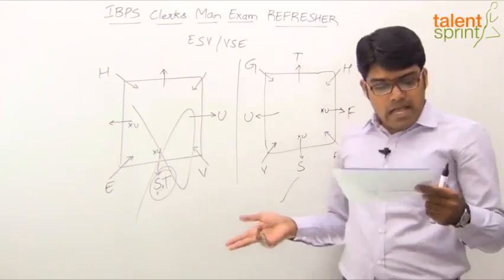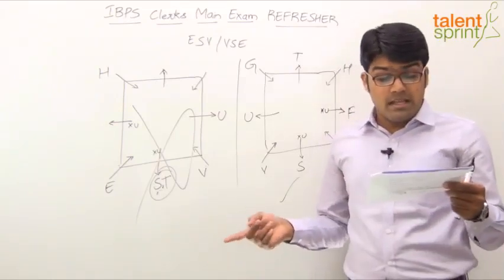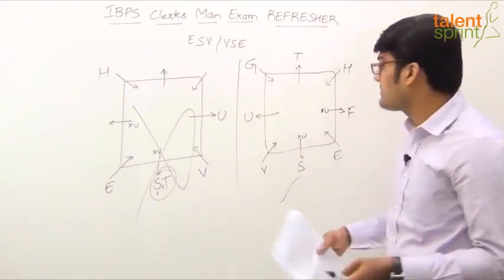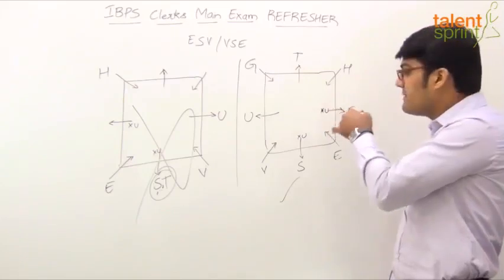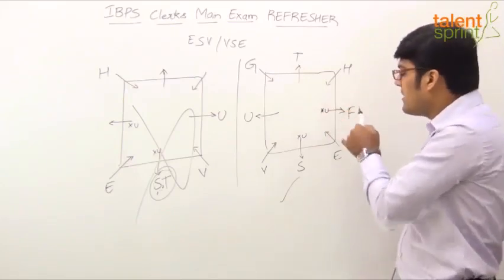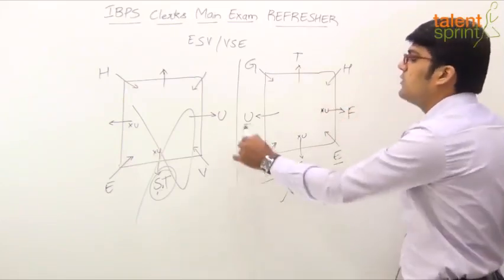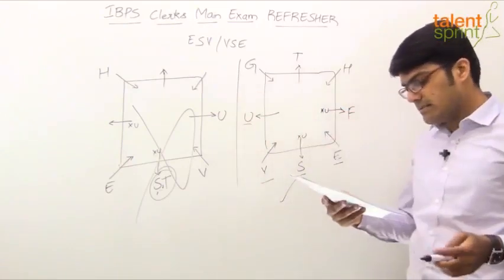Now, answering questions should not be difficult. How many people sit between F and G when counted from right side of F? Right side of F. What is right side of F? Clockwise, because F is facing outwards. So, how many people are there between F and G? 1, 2, 3, 4. 4 is the answer. Option 3.